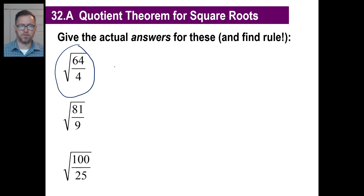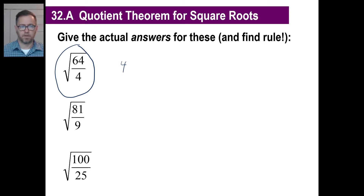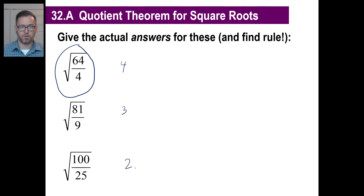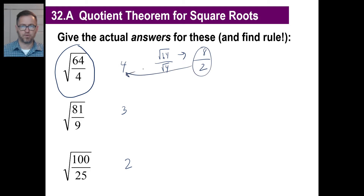The square root of 64 divided by four. Well, 64 divided by four is 16. The square root of 16 is four. 81 divided by nine is nine. The square root of nine is three. 100 divided by 25 is four. The square root of four is two. Now look at this — what you could actually do is bust up these two into two pieces like this. The square root of 64 divided by the square root of four. The square root of 64 is eight. The square root of four is two. Eight divided by two is also four.